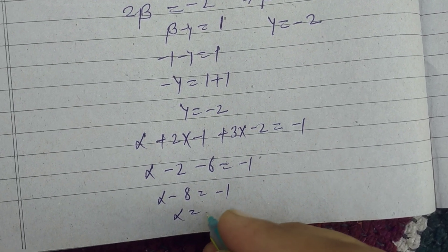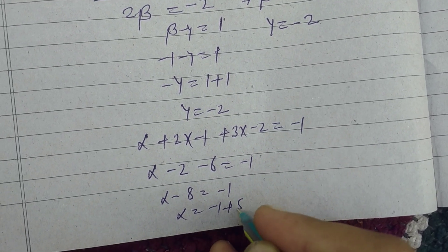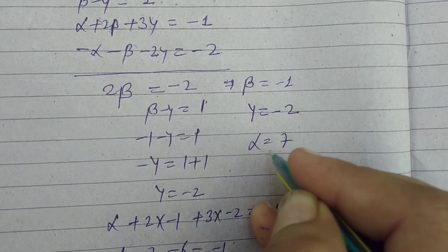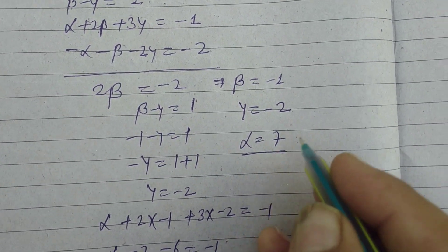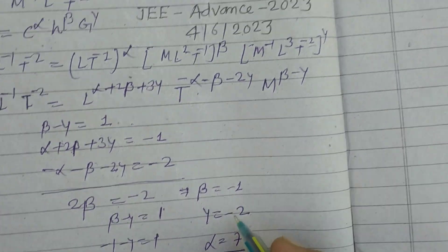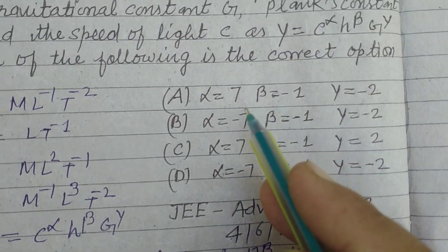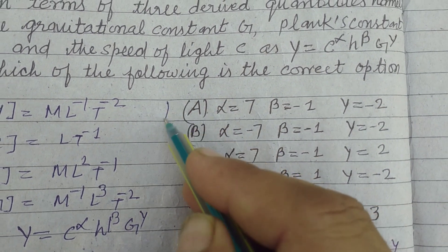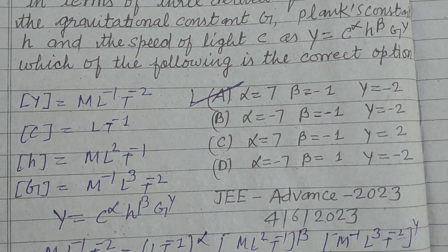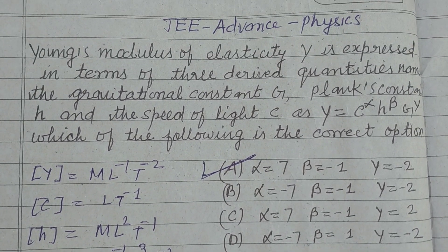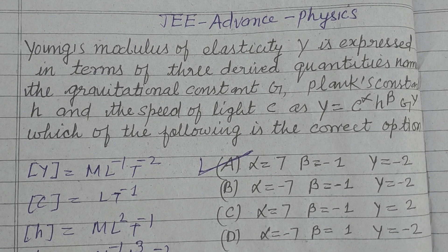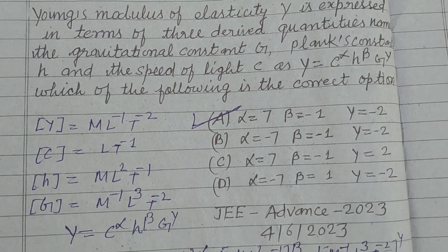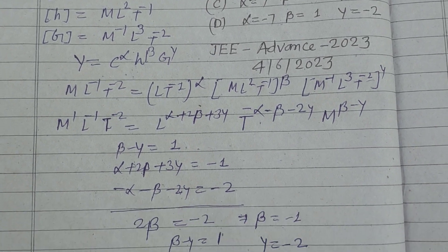Therefore alpha equals minus 1 plus 8, which is 7. So alpha is 7, beta is minus 1, and gamma is minus 2. Option A is the correct answer. In this way we solve this problem. I hope you got it — please like the video, subscribe to the channel. Thanks for watching.